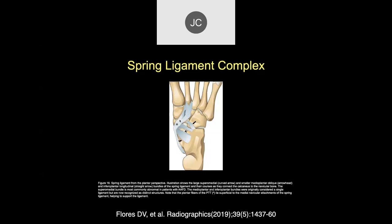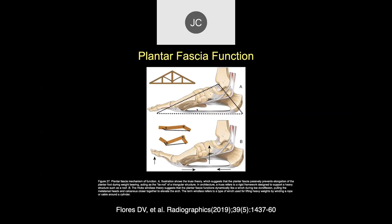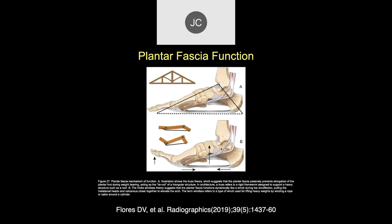The deltoid ligament has a deep component going between the medial malleolus and the medial margin of the talus, and then the superficial components. Looking at the arch like the roof structure, you have a nice normal arch here, and the plantar fascia stabilizes the base of this plantar arch. You also have the other tendons, which are important. And this is a longitudinal component of the spring ligament down there.